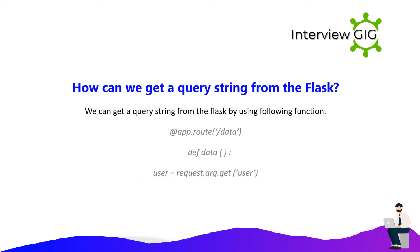How can we get a query string from Flask? We can get a query string from Flask using the following function: @app.route('/data'); def data(): user = request.args.get('user').